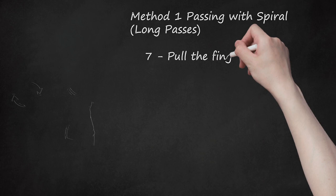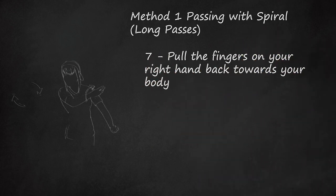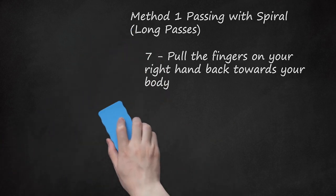Pull the fingers on your right hand back towards your body. As you finish the throw, slide your right hand down and towards your chest, pulling the skin of the ball down and into a spin. This is the hardest part of the motion, but is easy to learn with some practice. As you get better, you can also snap your left thumb down to put even more spin on the ball.